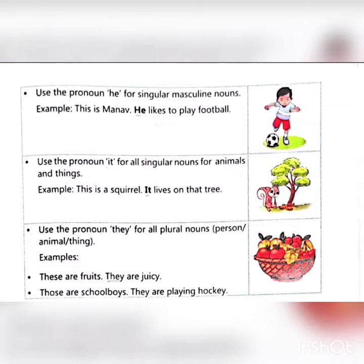Use the pronoun 'it' for all singular nouns for animals and things. Example: This is a squirrel. It lives on that tree.